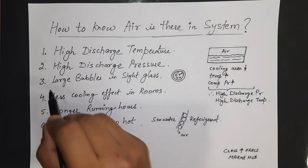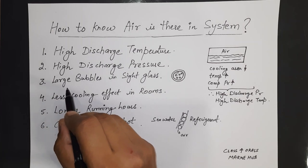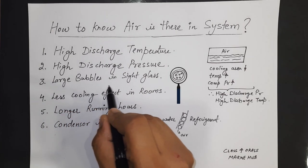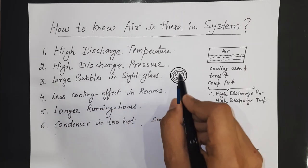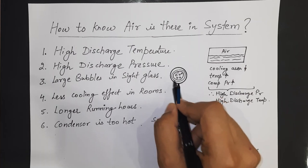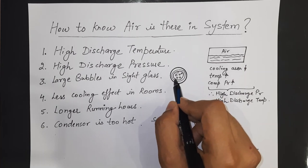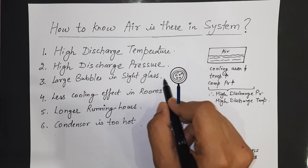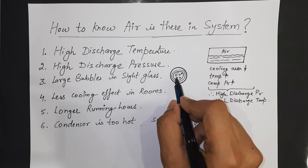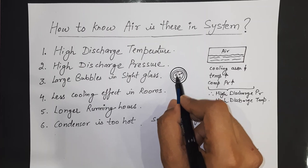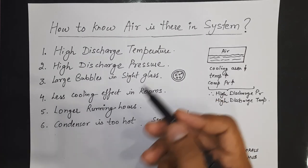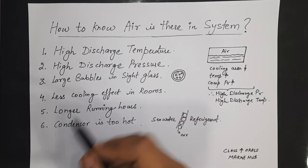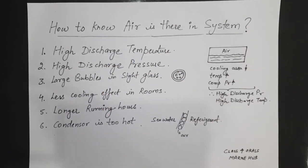Third, there would be visibility of large bubbles in the sight glass. This is the sight glass. So you may observe bubbles — large air bubbles. That will also be an indication of the presence of air in the system.